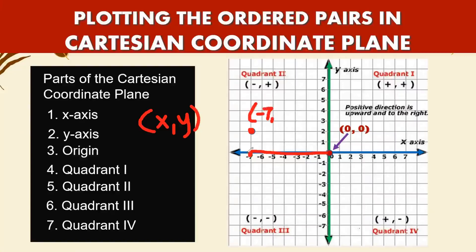You go upward to your point and look to your right, and that is positive two. Your y is positive two. So your coordinate is negative seven, positive two.